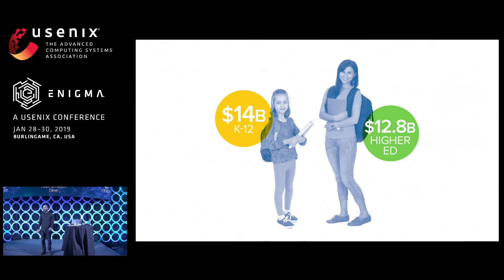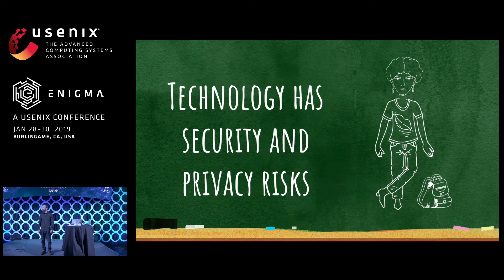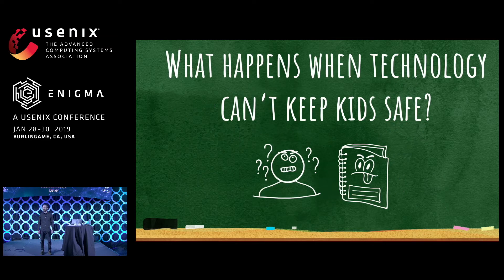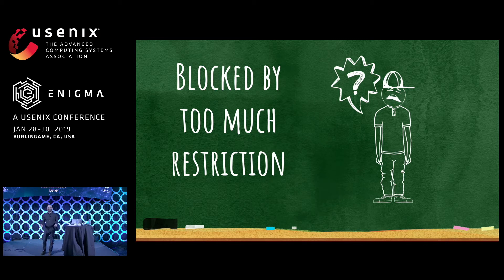But if you step into the classroom and look at the data, it's not clear that it's working. There are many barriers to deploying education technology, like broken screens or inadequate training. One very persistent barrier is a legacy of security and privacy problems. When you're talking to a concerned parent, the bar for acceptable risk is very high. When security and privacy don't work in the classroom, we end up with two outcomes we don't want: children losing control of their data before they can understand the consequences, or kids being stuck without access to technology's educational potential.